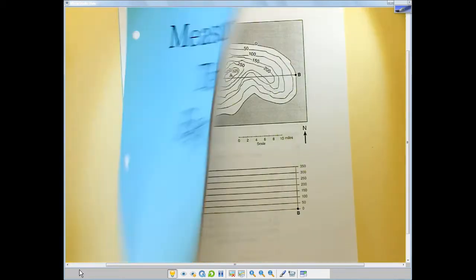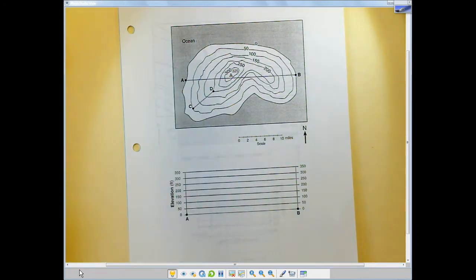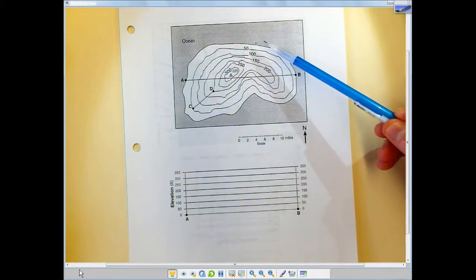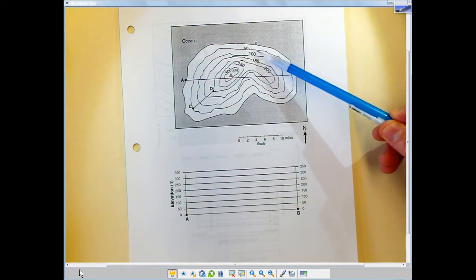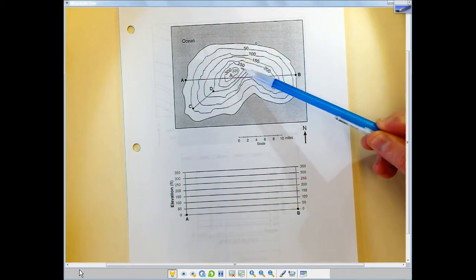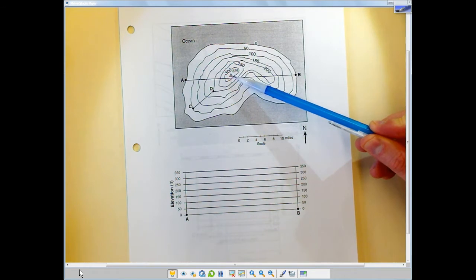Turn to page 16. See a map. All around you have the ocean. Right over here we have zero, sea level. 50, 100, 150, 200, 250, 300, and the peak is at 325. That's the benchmark.